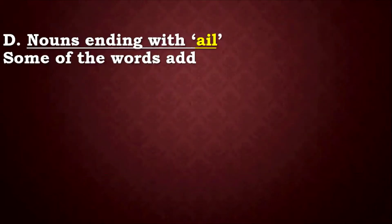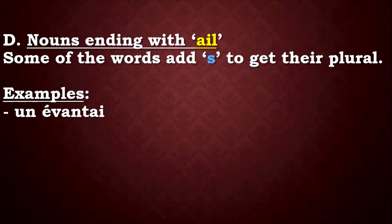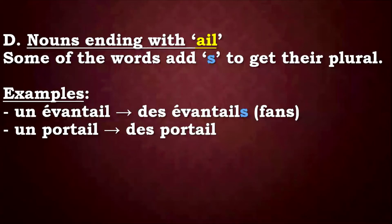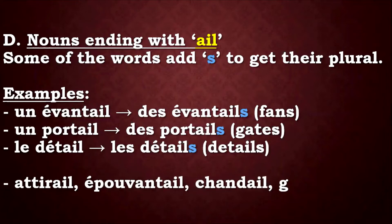Let's look at the nouns that end with -AIL. For some of these words, to get the plural, you just need to add S. And here are some examples. We have un éventail, des éventails — you can see the S.